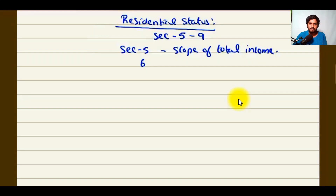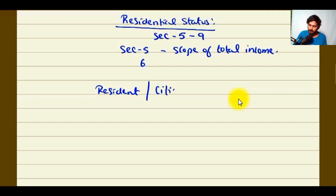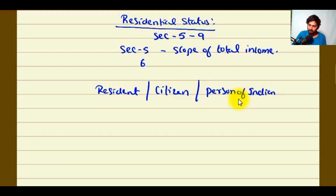The key terms we will be covering are: citizen, resident, and Indian origin. The first three persons — citizen, resident, and person of Indian origin — we will be seeing resident and citizen. And one more term is called the person of Indian origin, or POI.